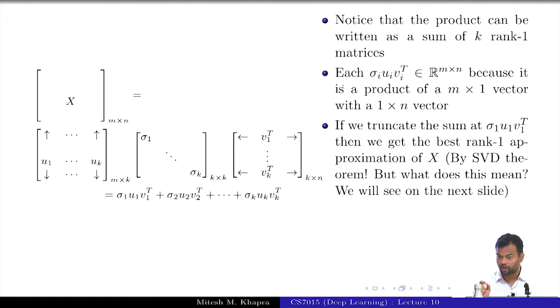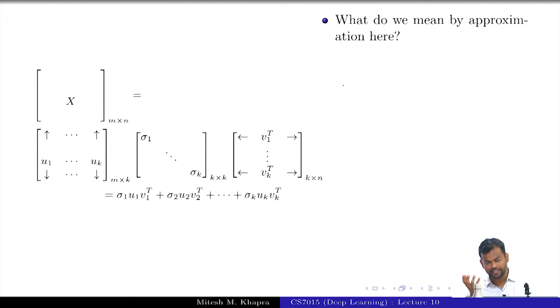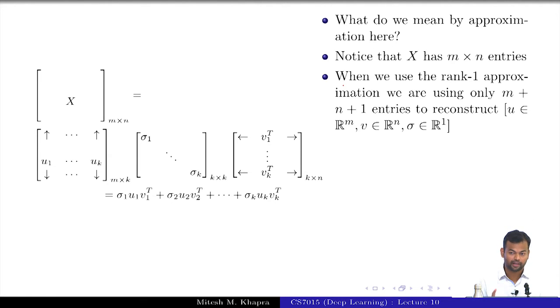If we truncate the sum at the first term we get the rank 1 approximation and by SVD theorem we know that this is the best rank 1 approximation. What does this actually mean that this is an approximation? We will see that on the next slide. Similarly if we truncate in the second term we get the same best rank 2 approximation. What do we mean by approximation here actually? Try to think in terms of compression. How many elements are there in the original matrix? m cross n. That is how many elements you need to describe the matrix completely. If you do a rank 1 approximation, how many elements are you using? m plus n plus 1. The original matrix has m cross n entries and when you do a rank 1 approximation you have m plus n plus 1 entries. That is the approximation. You are trying to really compress the original data using only these many variables.